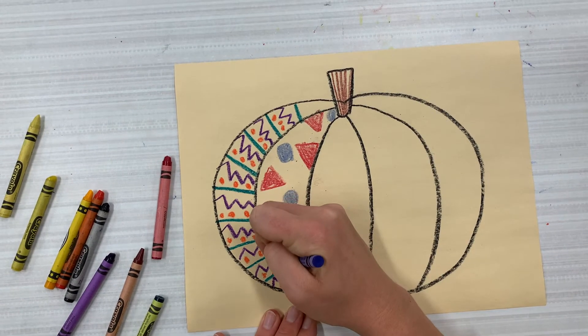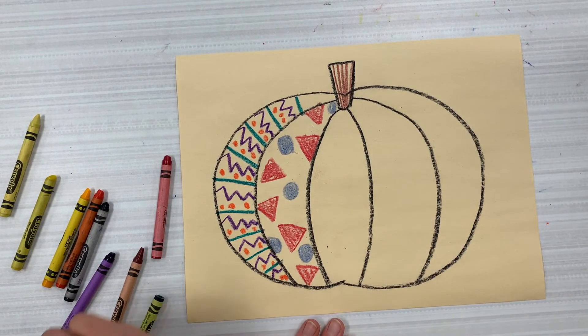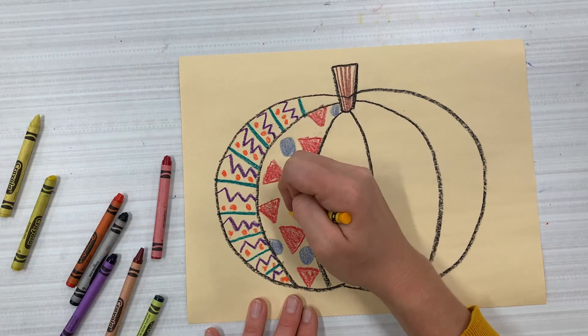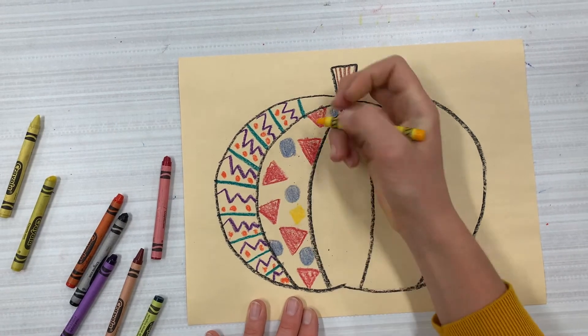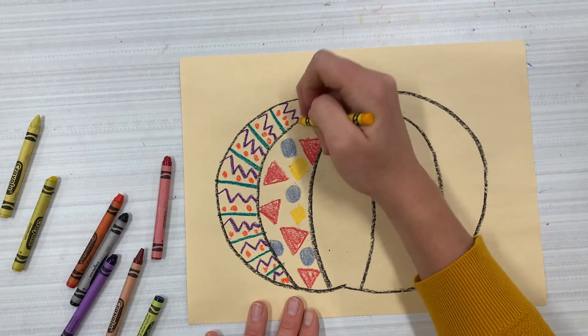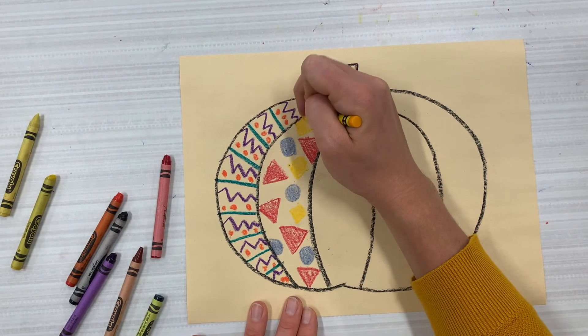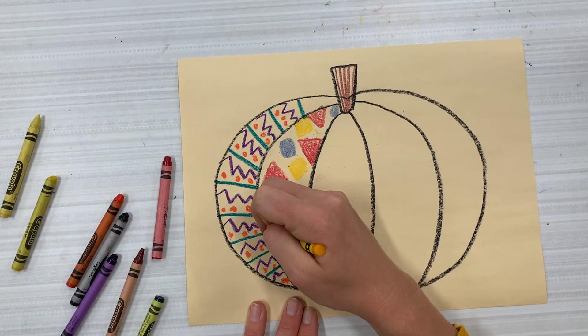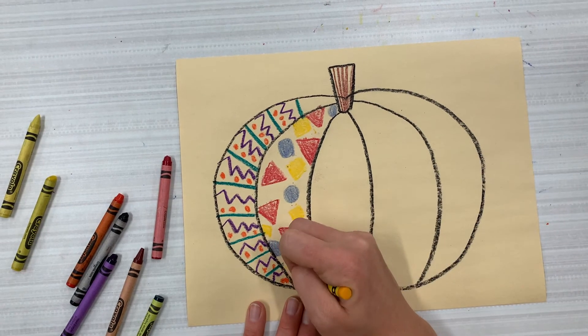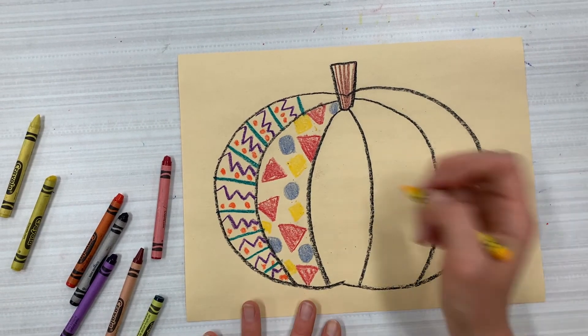So here you can see I'm using the primary colors. Now I'm making a pattern that's kind of random, so it's kind of scattered around, but it still uses only red triangles, blue circles, and yellow squares.